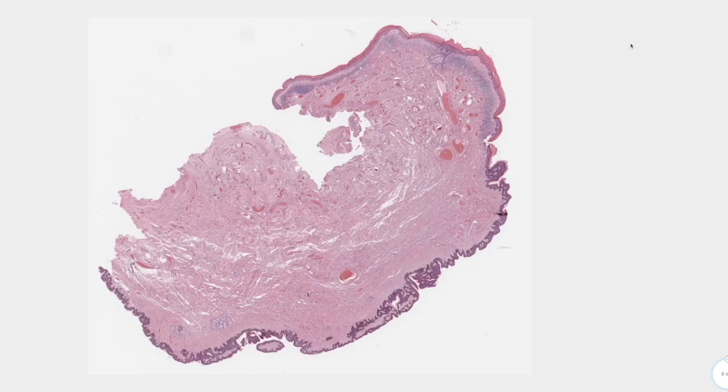The symptoms of this condition can be itching, burning sensation, soreness, and phimosis — which is an inability to retract the foreskin. Now let's go into the histology.